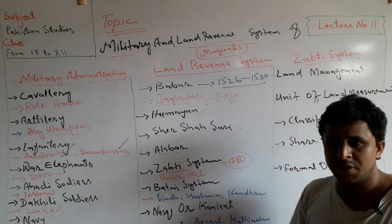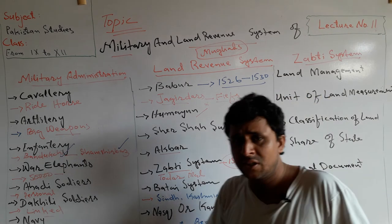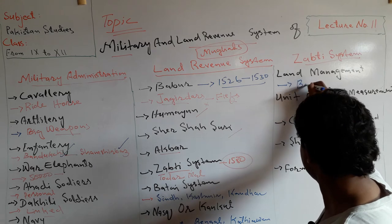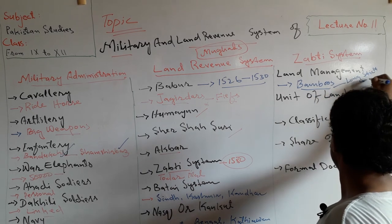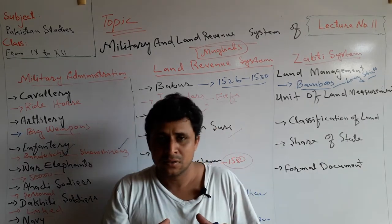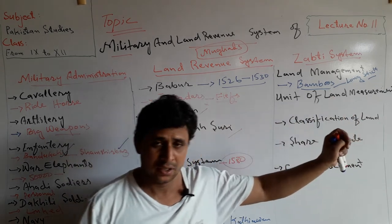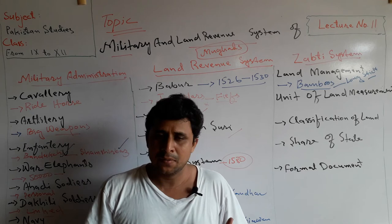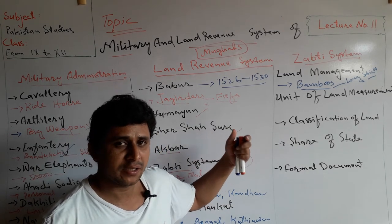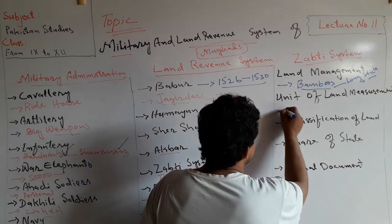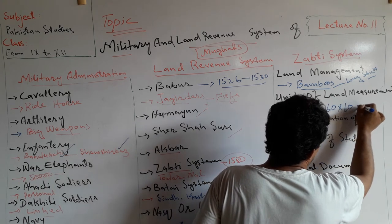The main feature of the Zabti system was that land was measured using bamboos — long sticks connected with iron rings. The unit of land measurement during the Mughal period, especially under Akbar, was the Bega, which measured 60 by 60 square yards.